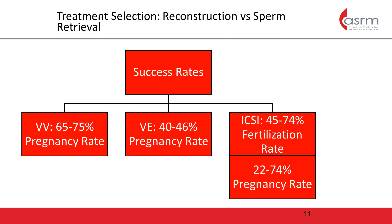In experienced hands, both microsurgical VV and VE can have excellent patency and pregnancy rates. For VV, the pregnancy rate can be as high as 75%. For bilateral VE, the pregnancy rate can reach 46%. Similarly, when sperm is surgically retrieved, fertilization rates range between 45% and 74%. While pregnancy rates are more variable, they can range from 22% up to 74%. IVF ICSI outcomes using surgically retrieved sperm are similar regardless of the source of the sperm, and whether the sperm used are freshly extracted or frozen-thawed.